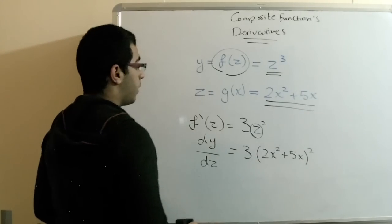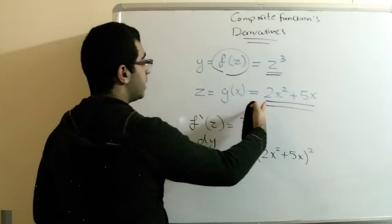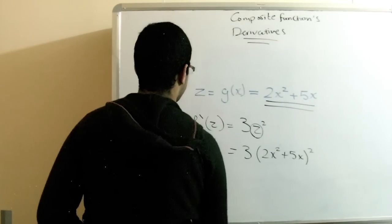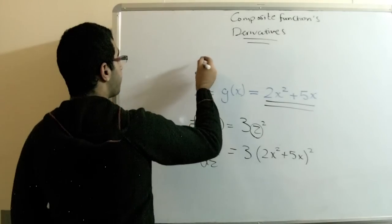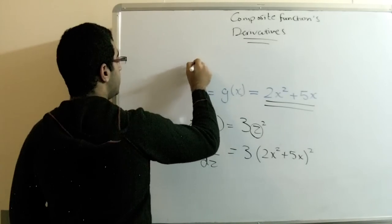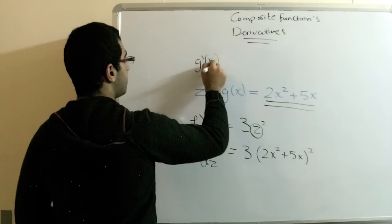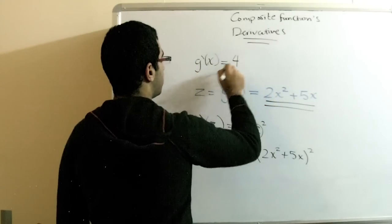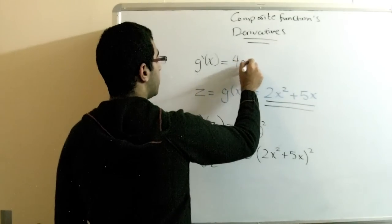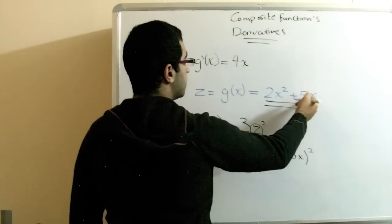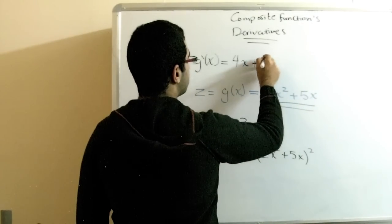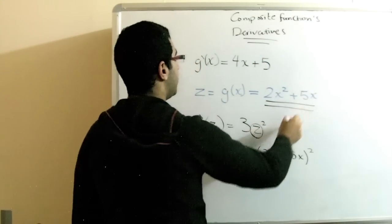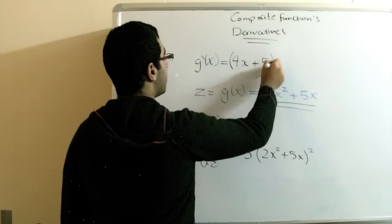We go to the second part of the problem where we get the derivative of this one. So g'(x) equals—we drop the two downwards to get 2 times 2, get 4, and 2 minus 1 gives us x. Here we drop the 5, and 1 minus 1 gives us 0, so we drop the x. This is the derivative of our g(x).